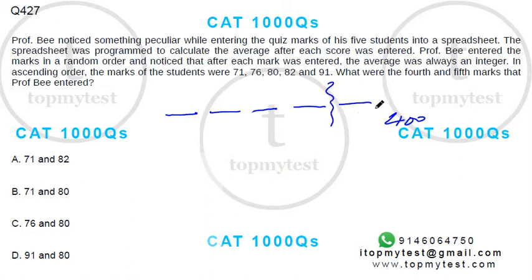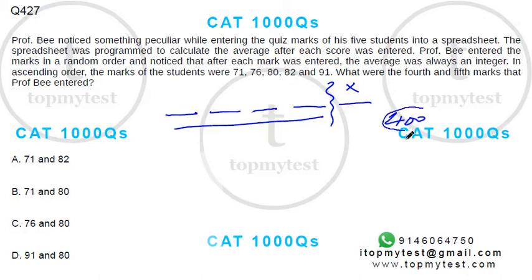The second-last average — before he enters the last mark — must also be an integer, which means the sum of the first four marks must be a multiple of four. Since 400 itself is a multiple of four, the number entered last must also be a multiple of four.